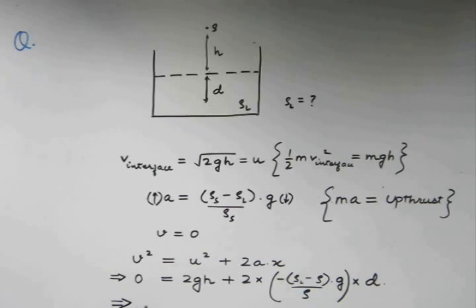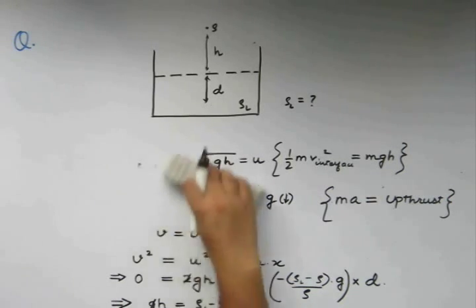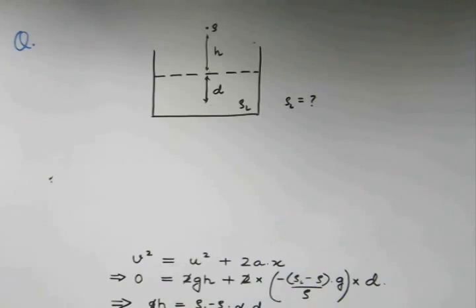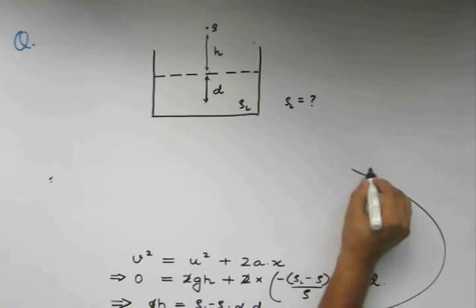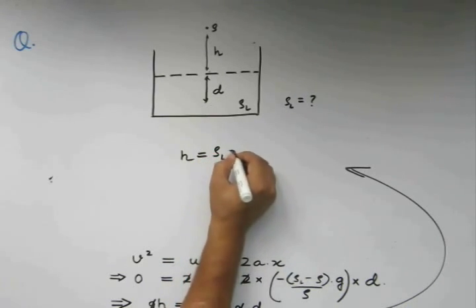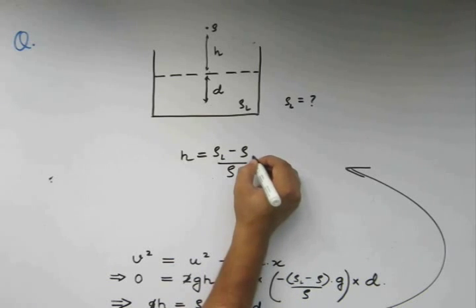g times h. So, this is now equal to x. The 2 gets cancelled off because of the zero. We have g times h is equal to rho l minus rho by rho into g into d. g also gets cancelled off. Now, what we are left with is h is equal to rho l minus rho by rho into d.